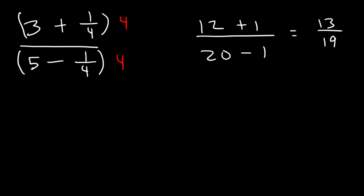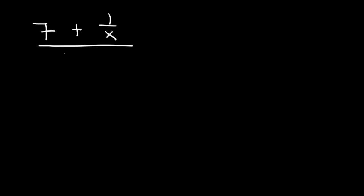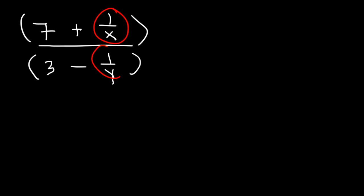And so that is the answer: 13 over 19. Now let's try another example: 7 plus 1 over x divided by 3 minus 1 over y. What we need to do is multiply the top and the bottom by the common denominator of these two fractions, which is simply x times y.